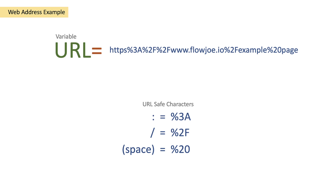What if you want to get back to a human-readable URL from a URL with URL-safe characters? We want to get something like https://www.flowjo.io/example page — nice and human readable.